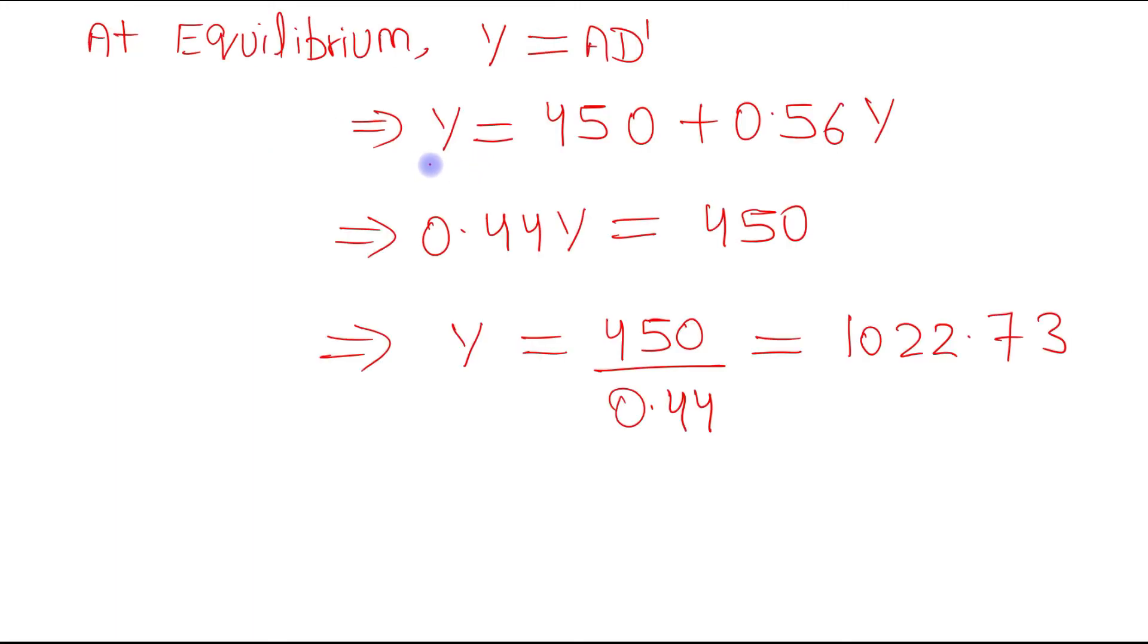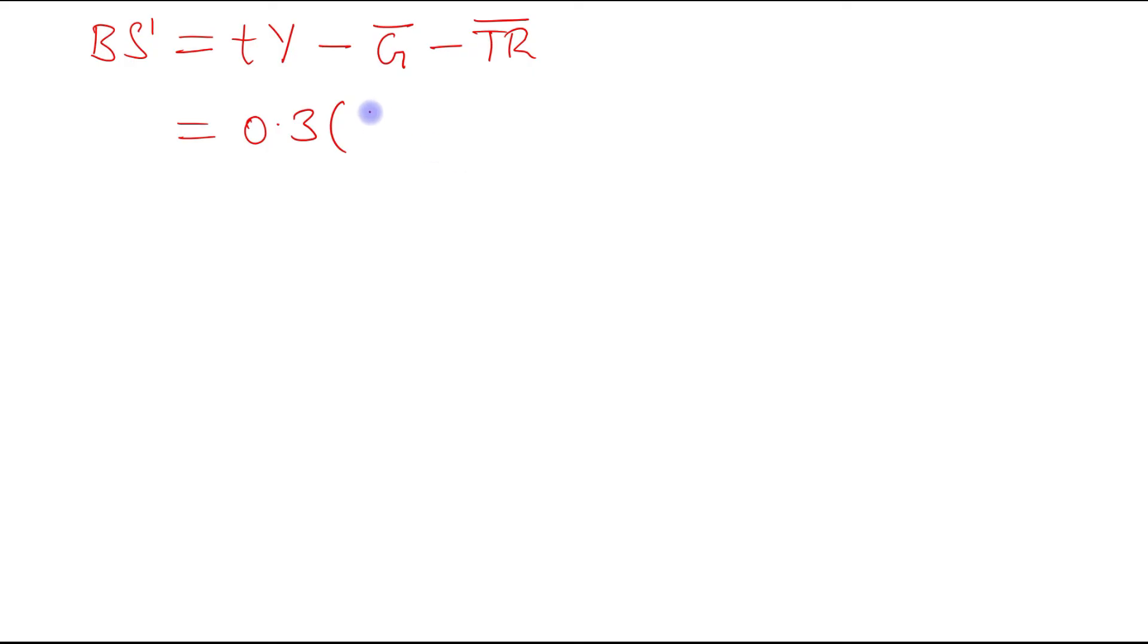Next we will calculate BS dash, that is budget surplus: tY - G - TR. Tax rate is 0.3, equilibrium level of income we have just calculated is 1022.73, minus government expenditure is 250, transfer payments 100. This will become 306.82 - 350.